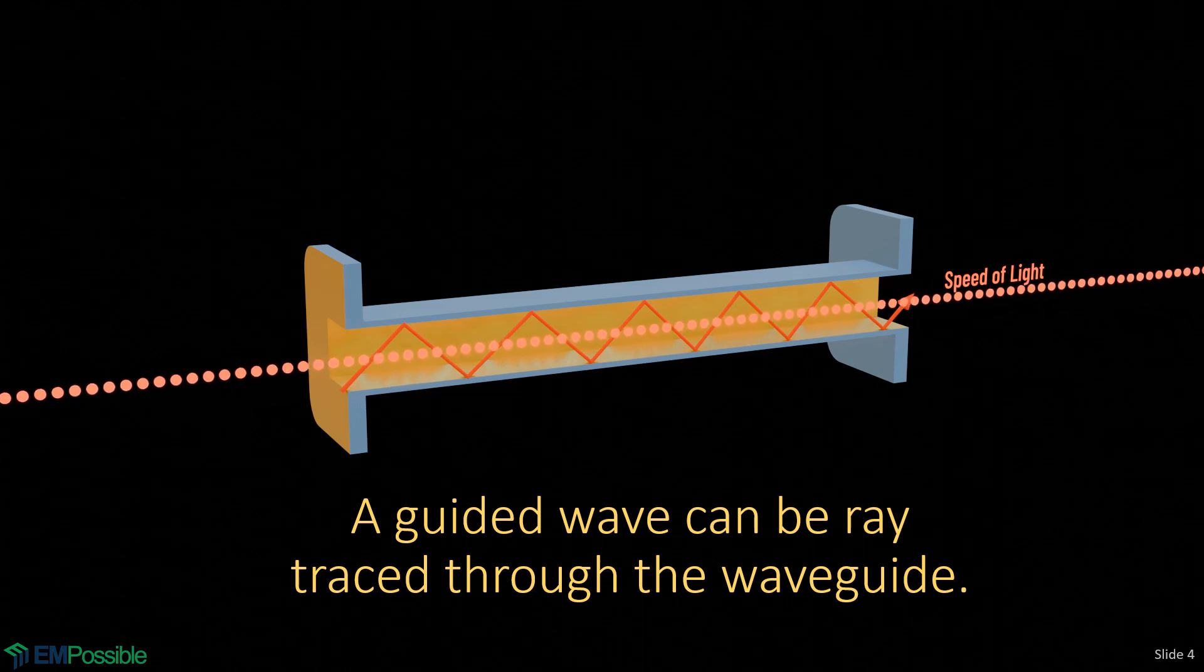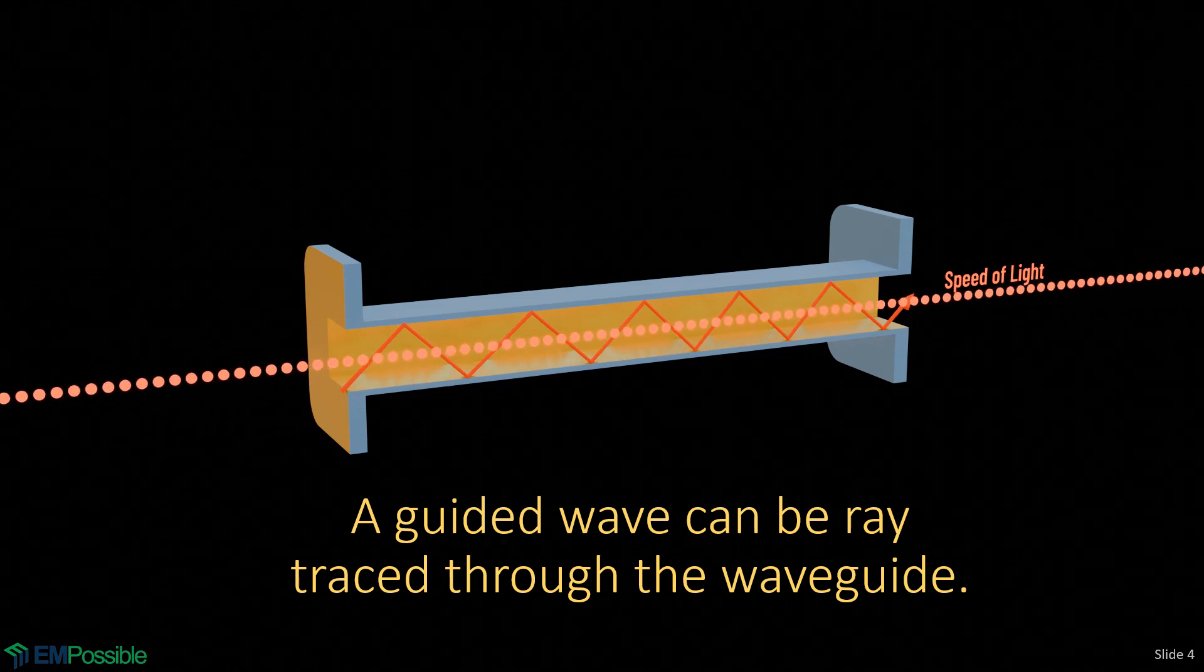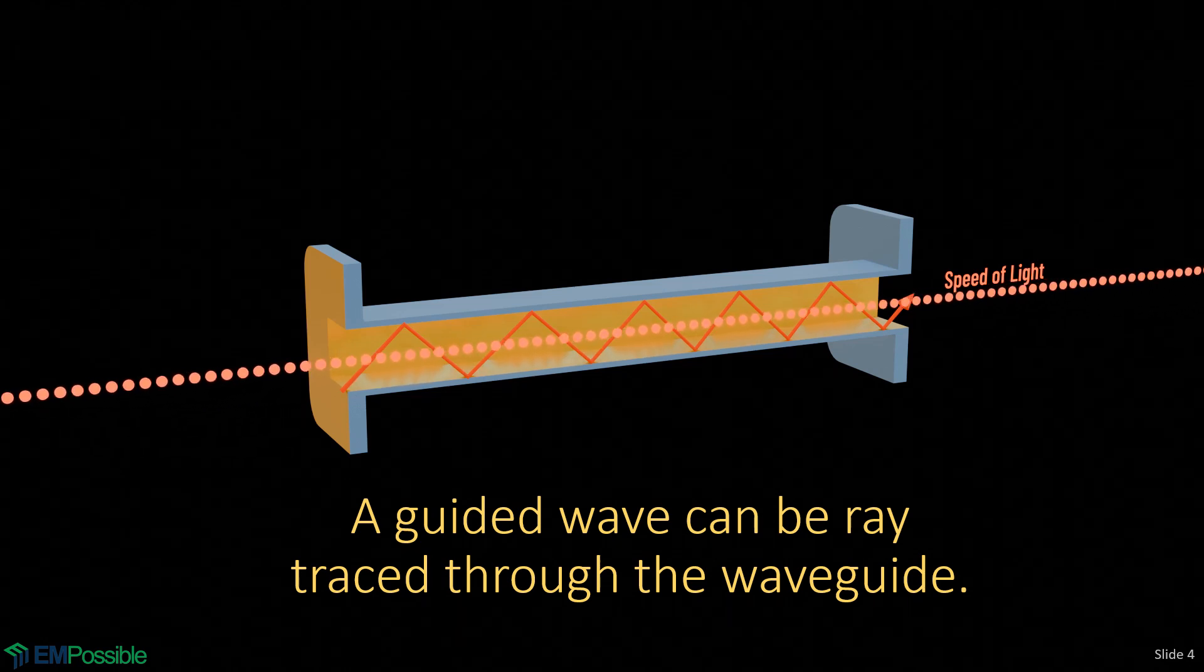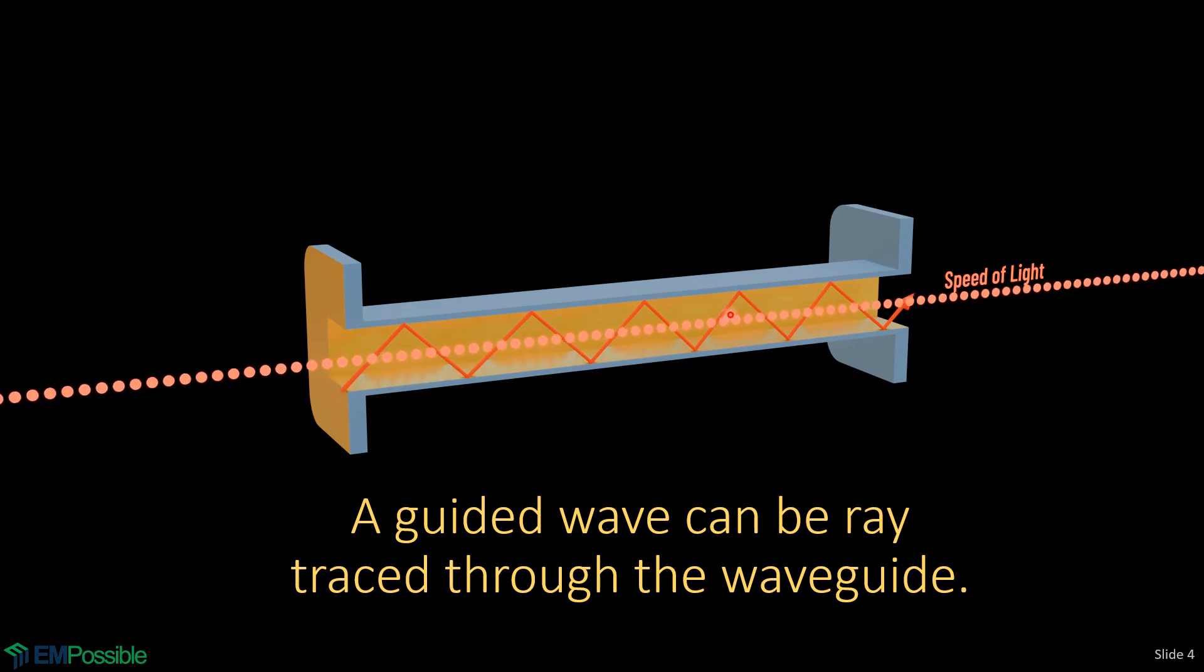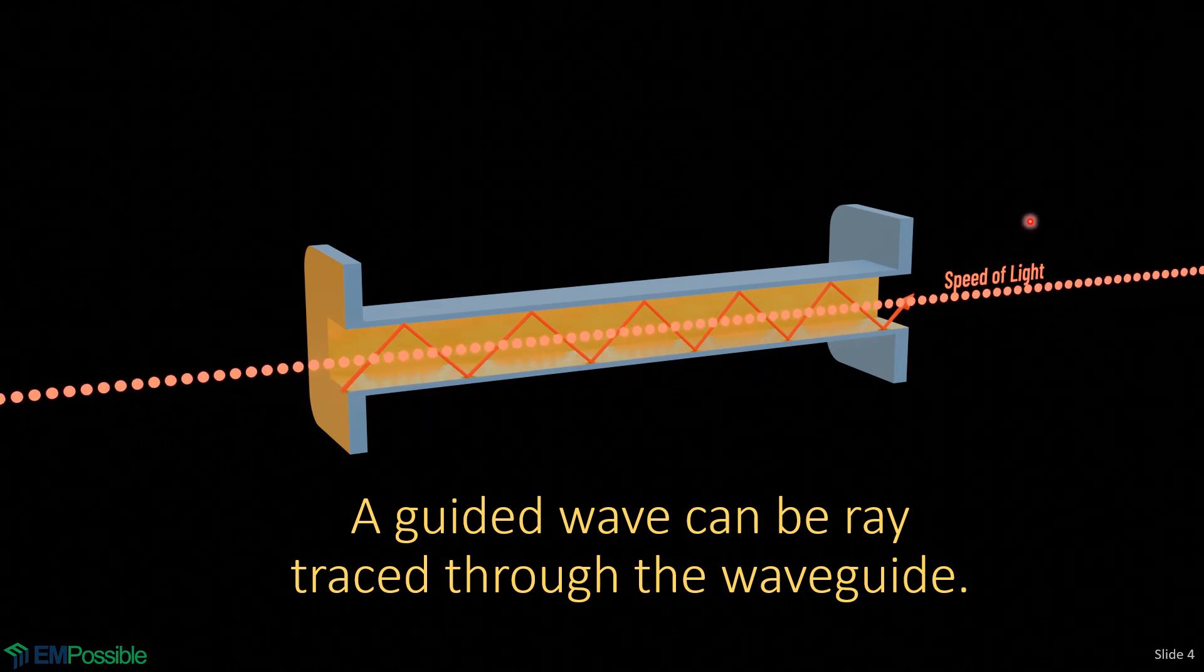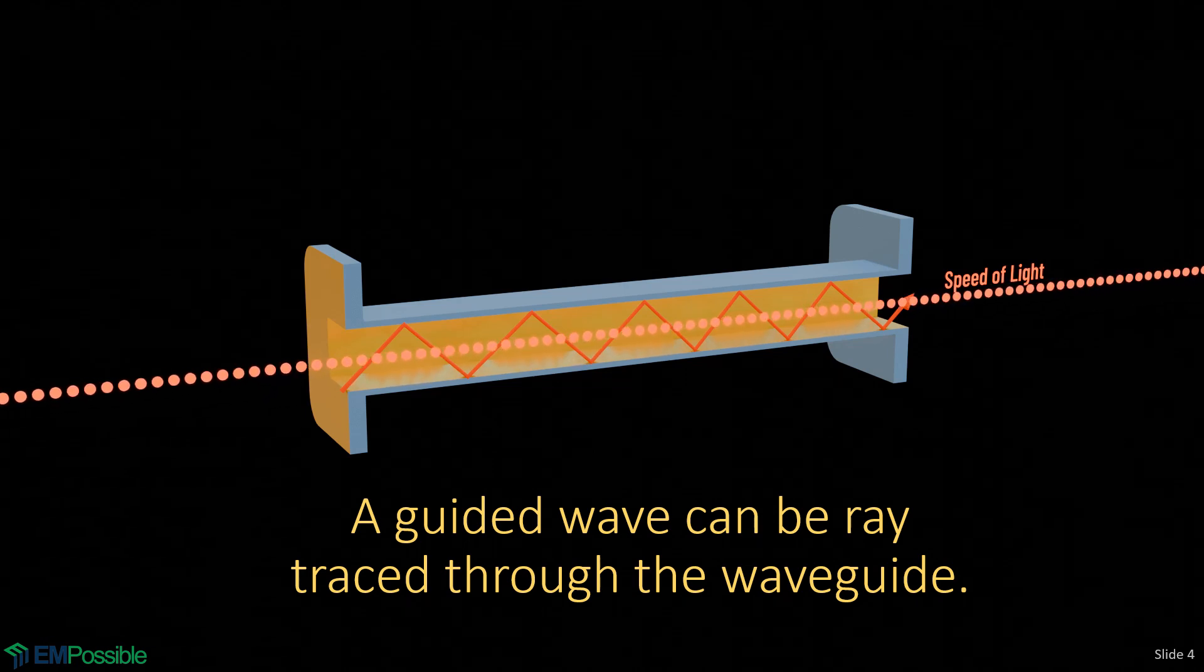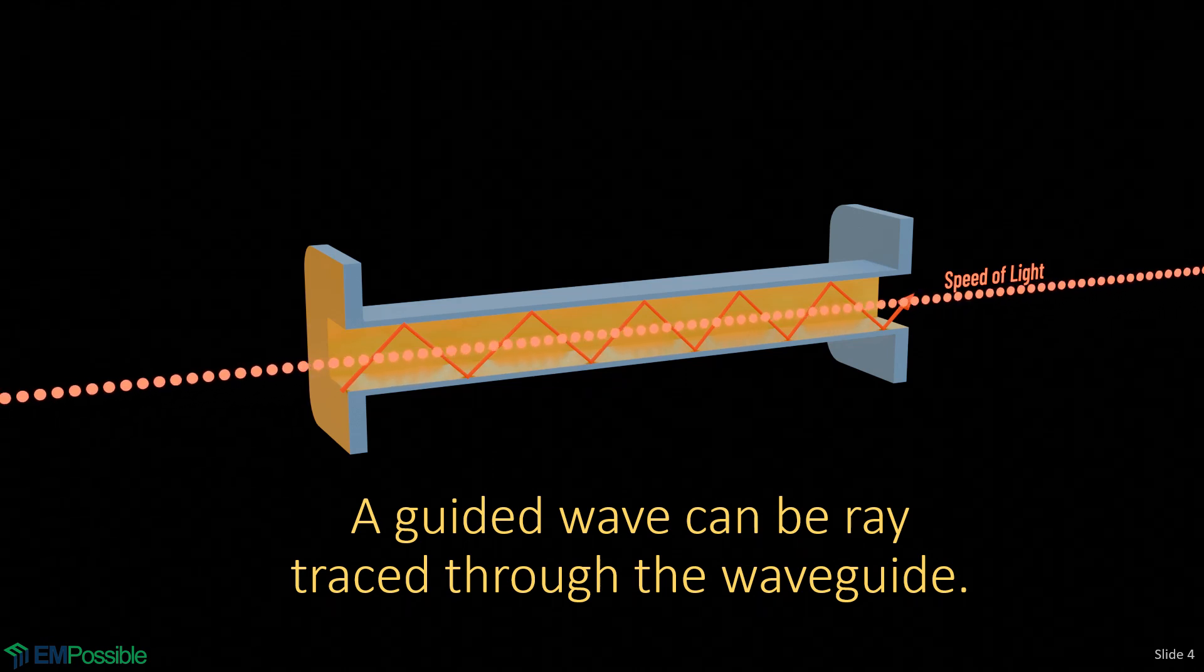One thing we can do with a waveguide is sort of ray trace what's going on. You can imagine launching a wave into the left section of this waveguide and it bounces around because it's a metal waveguide and the edges act like a mirror. And that's the waveguide. That literally is what happens.